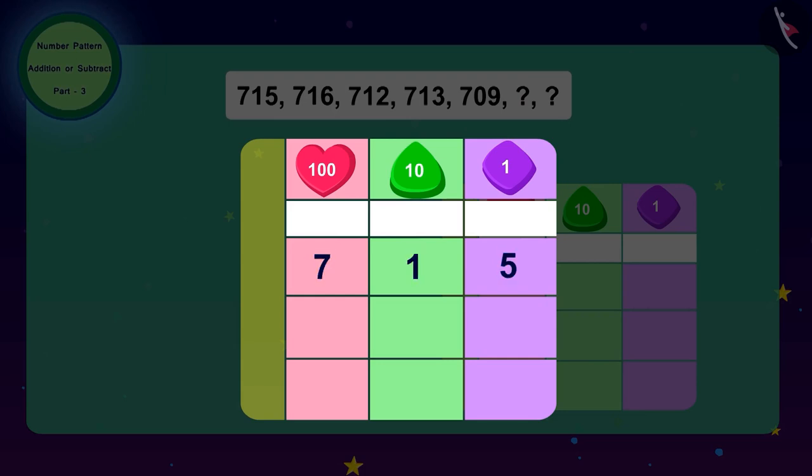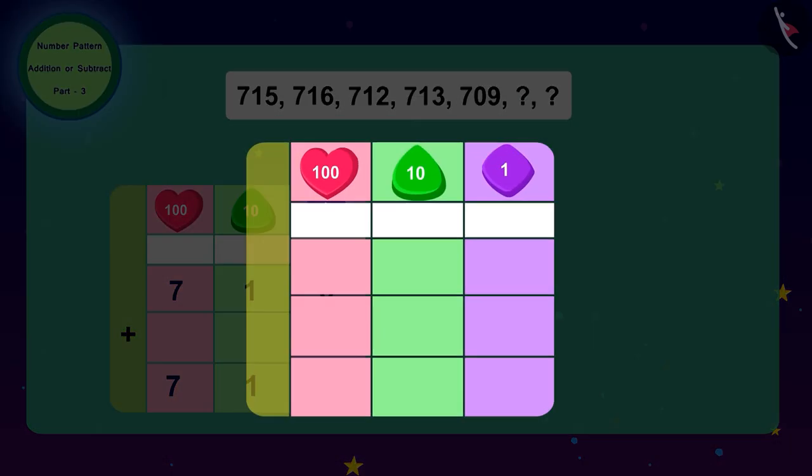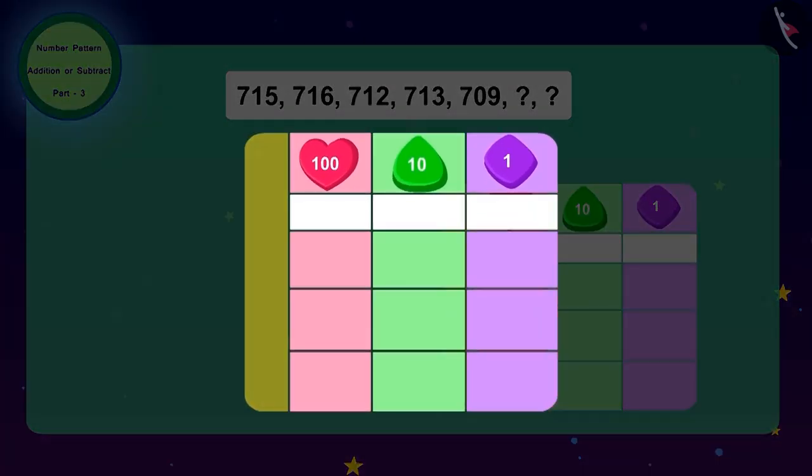What do we have to do to go from 715 to 716? We will have to add one. And what do we have to do to go from 716 to 712? We will have to subtract four. Absolutely correct. Now let's look at the numbers after this. What do we have to do to get 713 from 712? We need to add one.